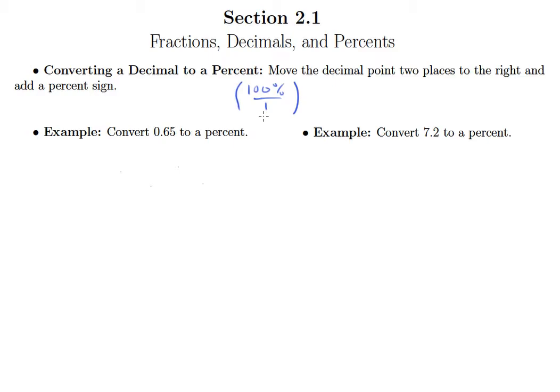This is a nice shortcut. If you have a decimal number that you want to convert to a percent, it's simple: move the decimal point two places to the right and add a percent sign. So 0.65 is 65%.